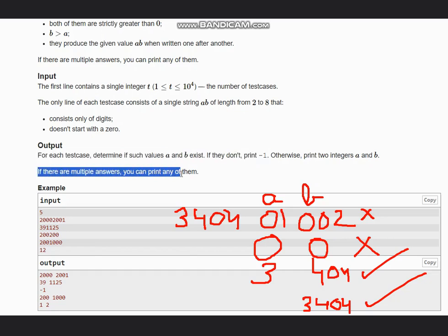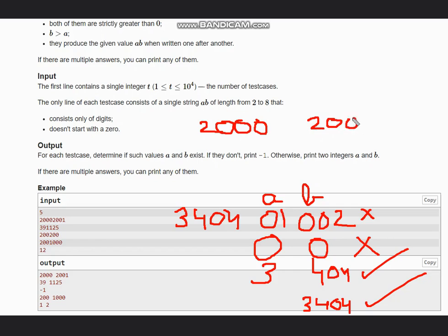If there are multiple answers we can print any of them. For the first test case we have 20002001. You can directly see that A can be 2000 and B can be 2001.